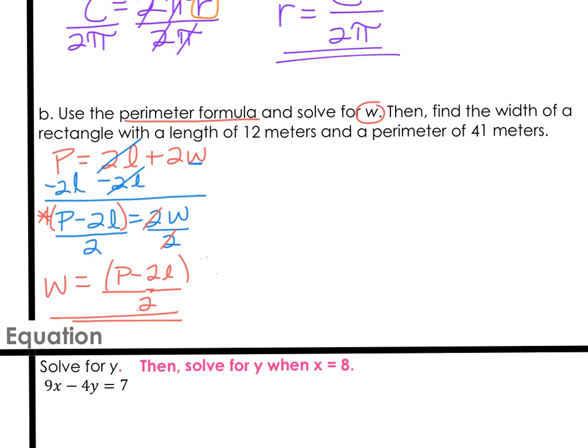This is the final answer for W. At any rate, it says find the width if the rectangle has a length of 12 and the perimeter is 41. The nice thing about isolating W in the first part of the problem is now we can just plug in 12 and 41 on the right-hand side. We would know then that W equals 41 minus 2 times 12. And again, that's all in parentheses, divided by 2.